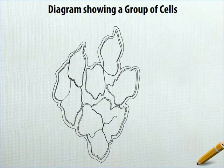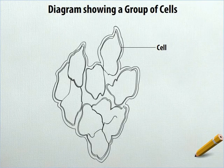Label one of the structures as cell. Label the outer layer of the irregular structures as cell membrane.